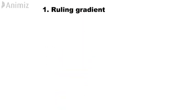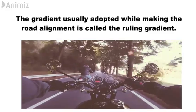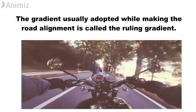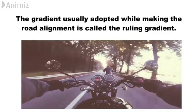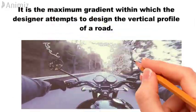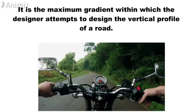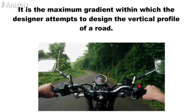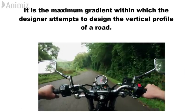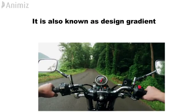1. Ruling gradient. The gradient usually adopted while making the road alignment is called the ruling gradient. It is the maximum gradient within which the designer attempts to design the vertical profile of a road. It is also known as design gradient.